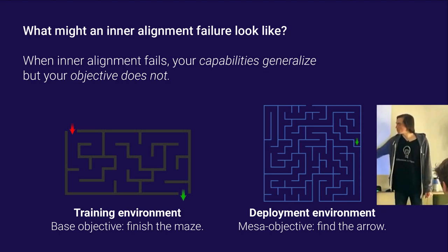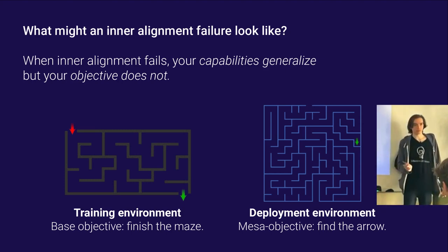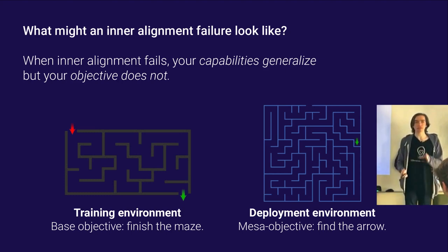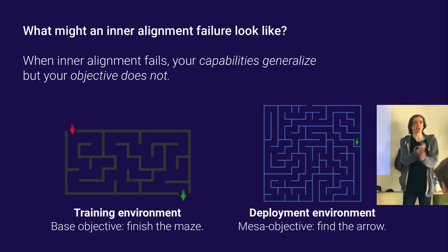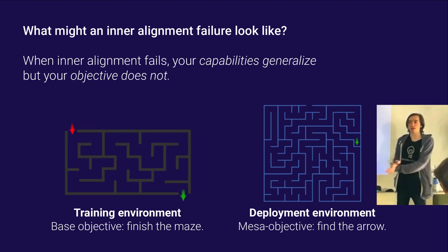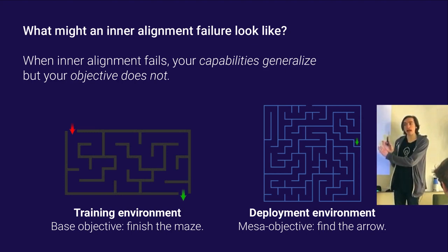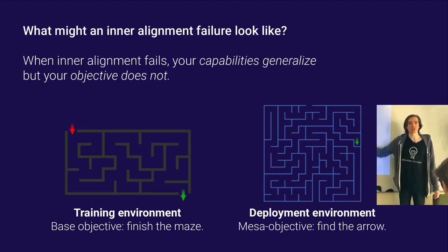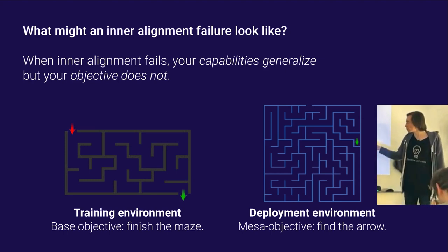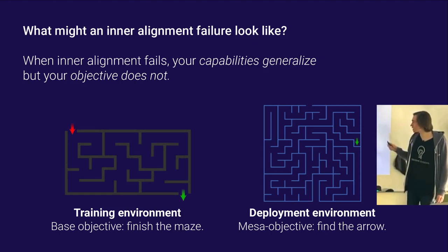If the agent generalizes by going to the green arrow instead of the end of the maze, what's happened is your model has learned a very powerful general-purpose capability — the capability to solve mazes — and that capability is misdirected. You've deployed a model that is using its capabilities not to do the thing that you wanted. We do not want to be in situations where we deploy powerful capable models where they don't actually generalize to what we wanted them to use those capabilities for.